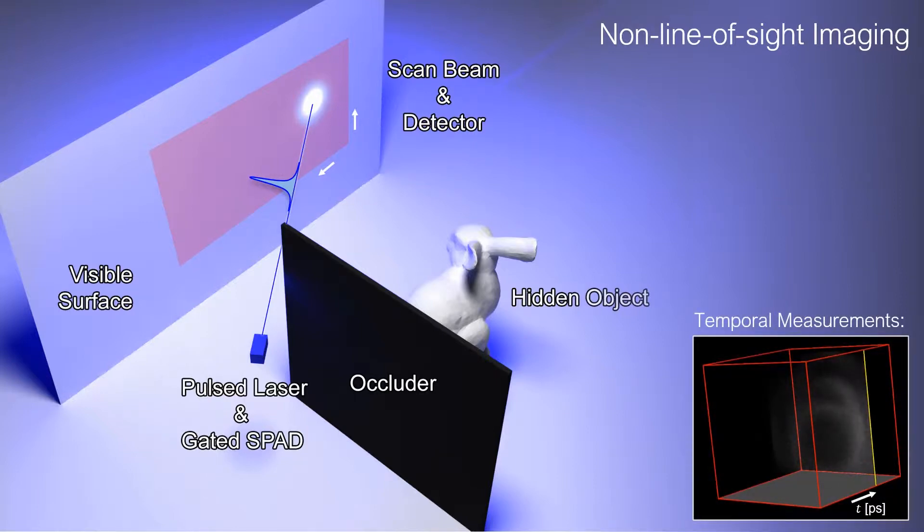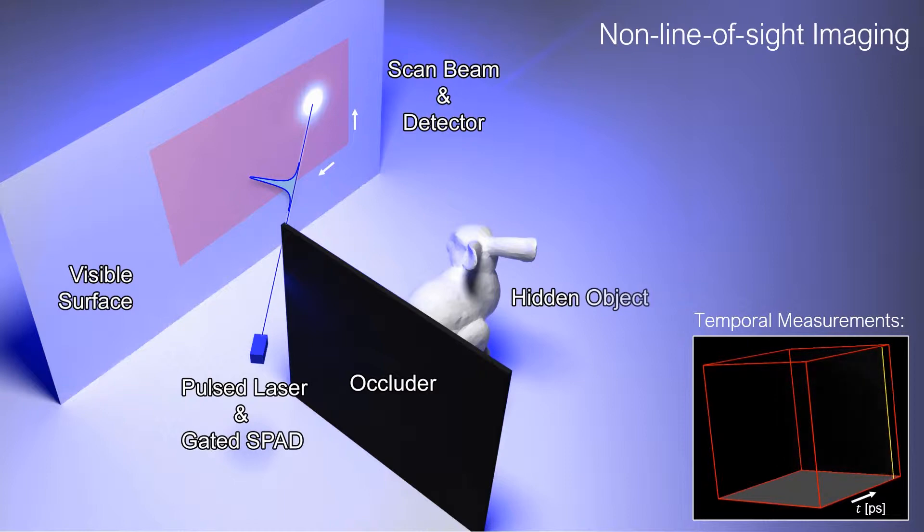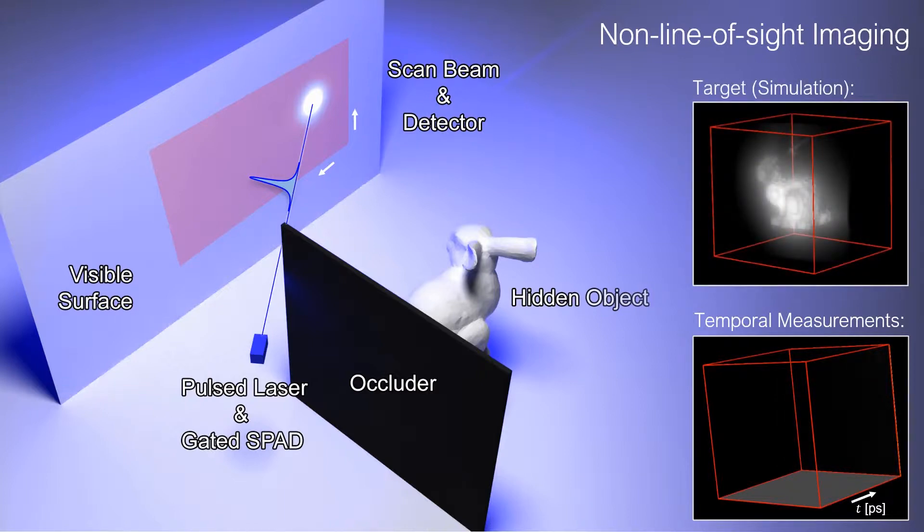Here is such a measurement with picosecond time resolution. From it, the hidden object shape and reflectance can be recovered.